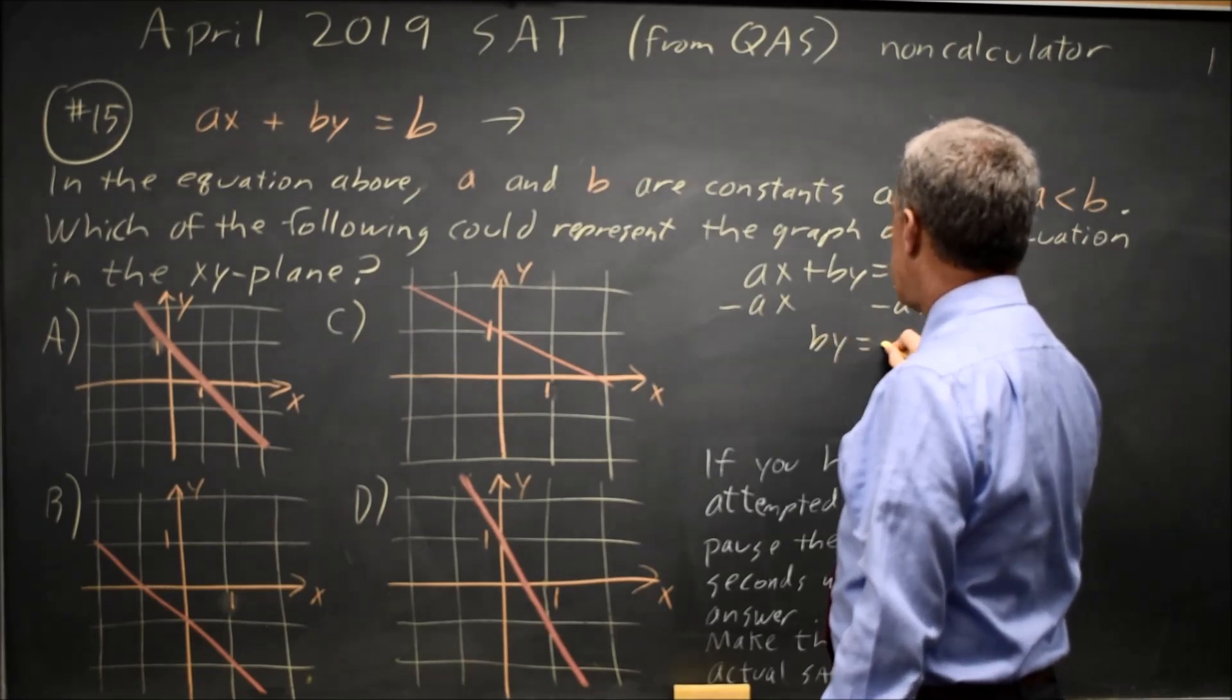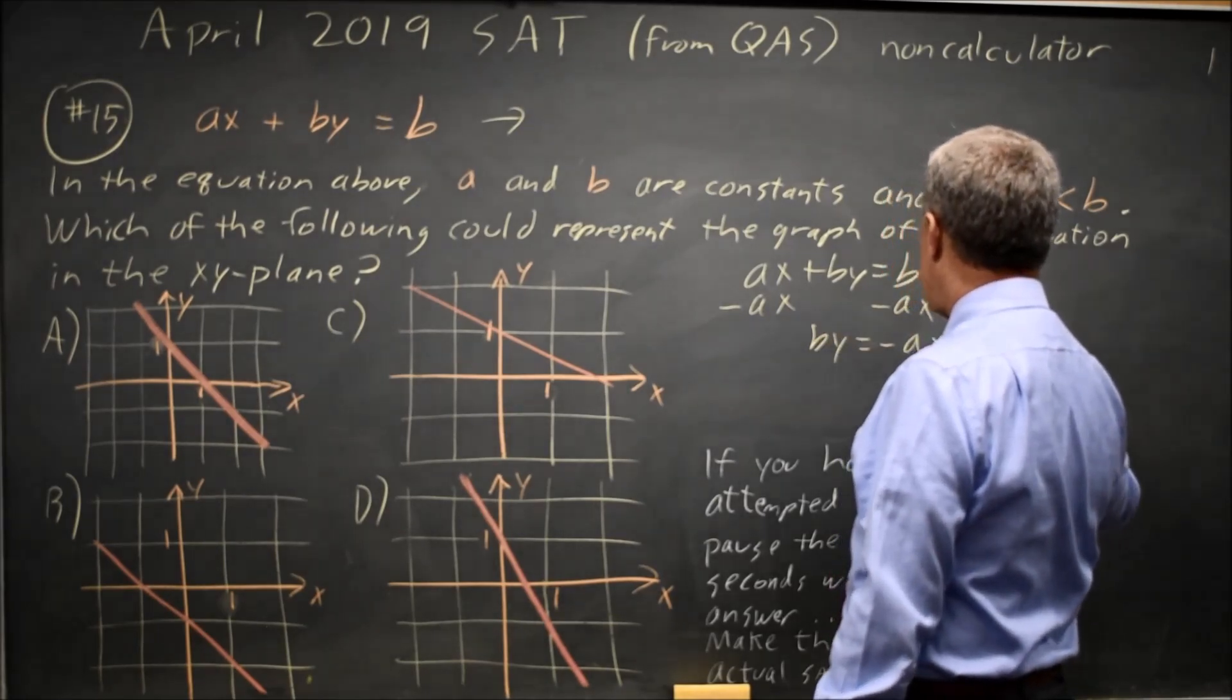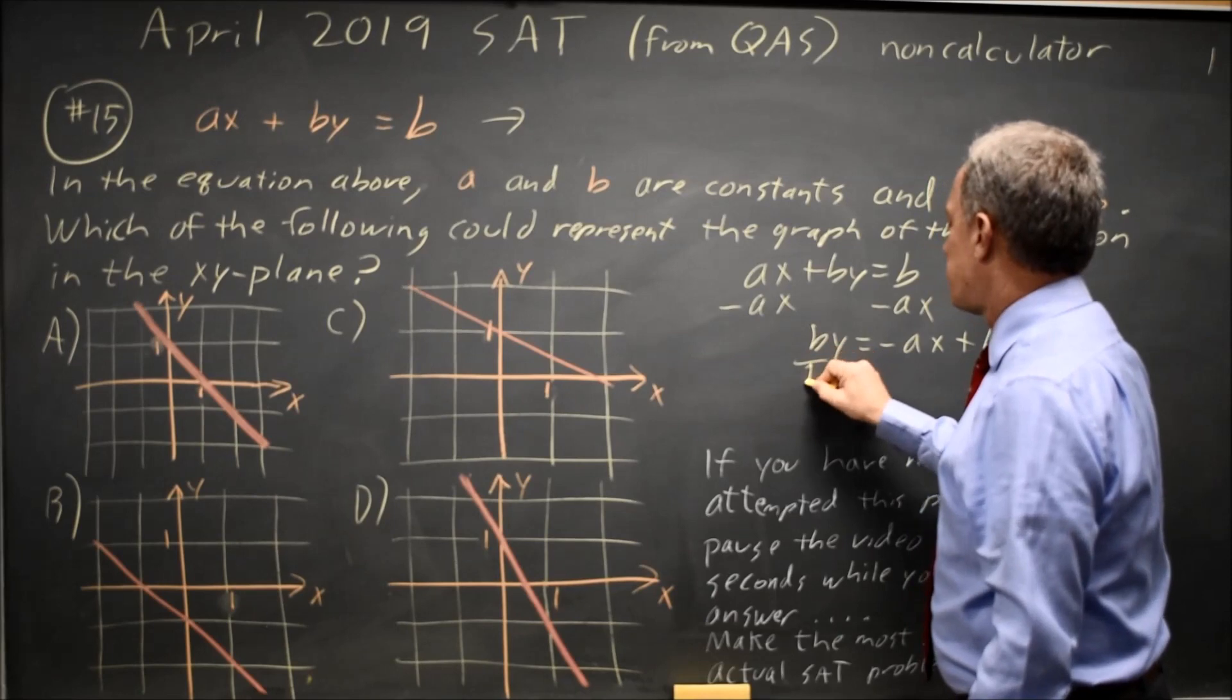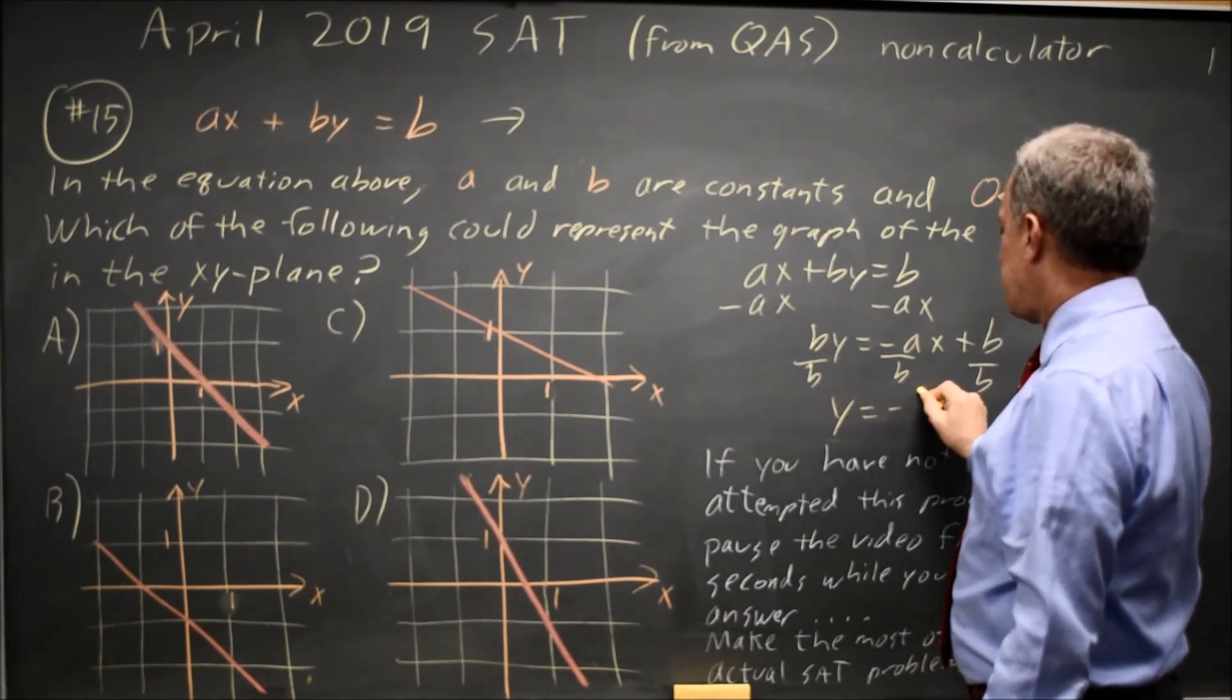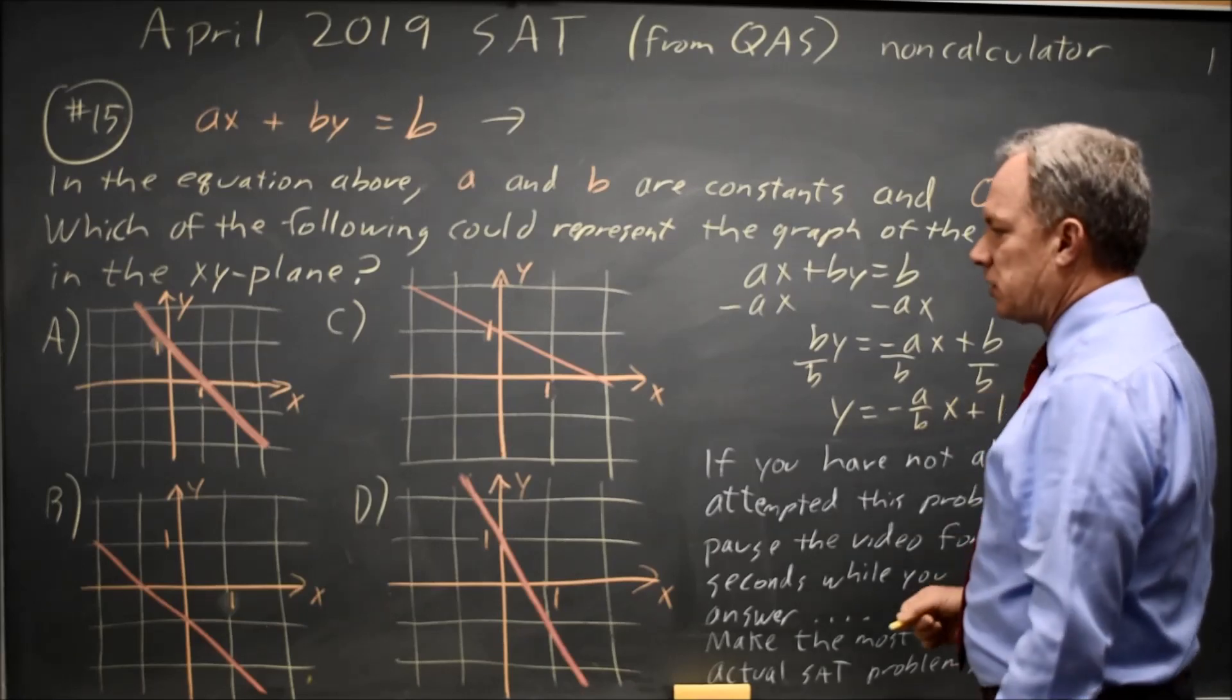and I get by equals negative ax plus b. Divide both sides by b, and I get y equals negative a over bx plus 1.